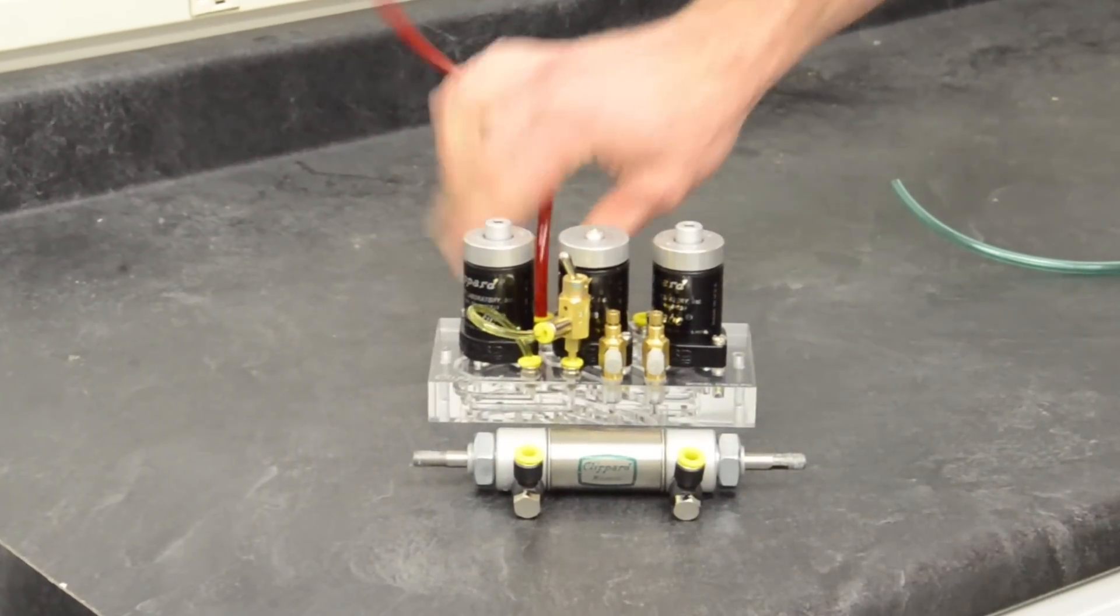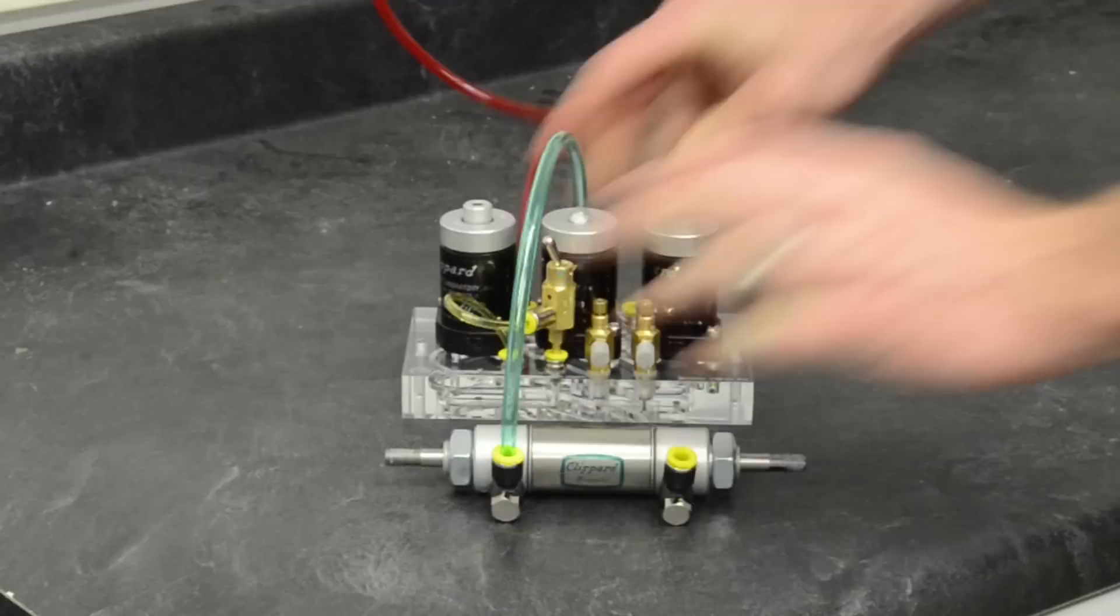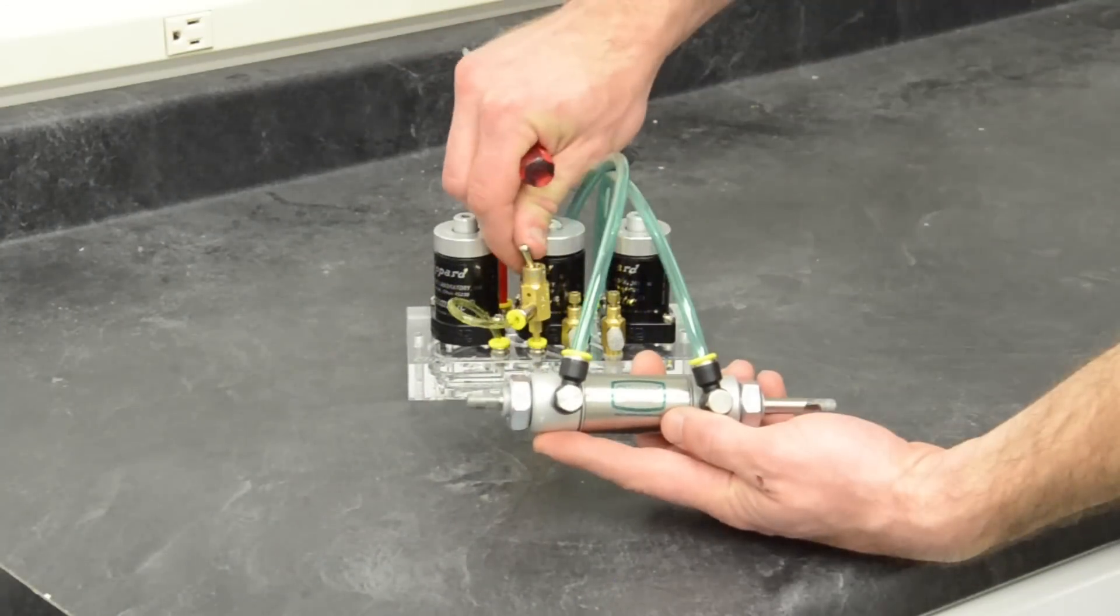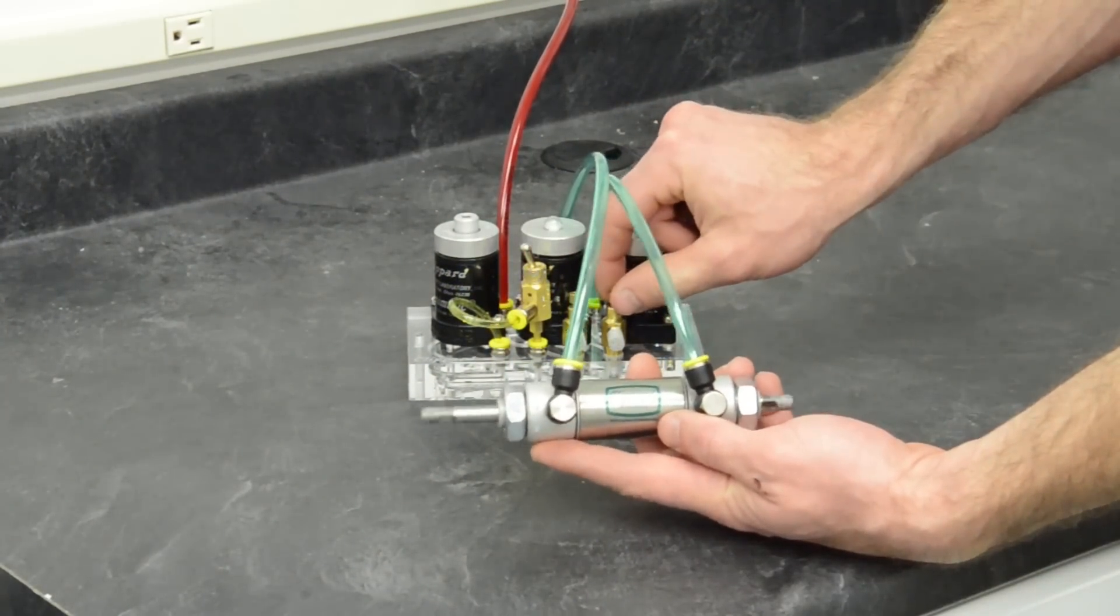We apply supply pressure to the port labeled supply and connect cylinder extend and cylinder retract to our double acting cylinder. Turn the air on, flip the toggle, and make cylinder speed and delay adjustments if desired.